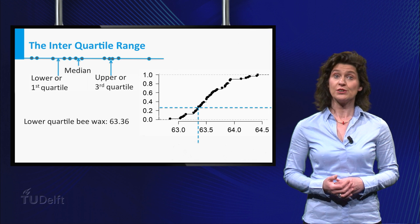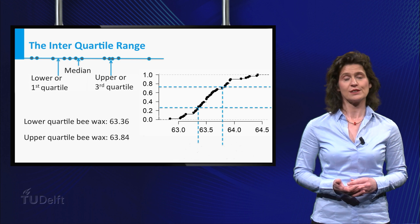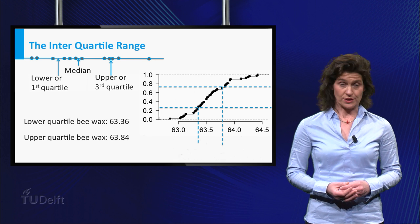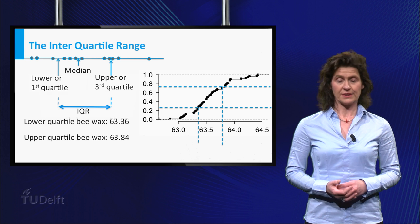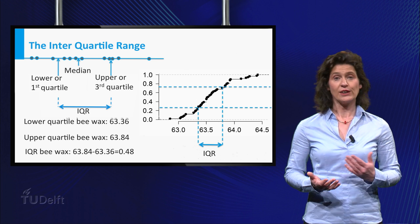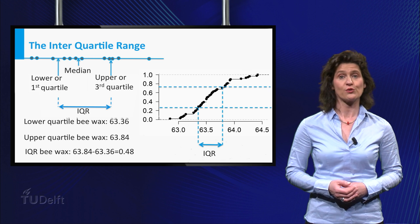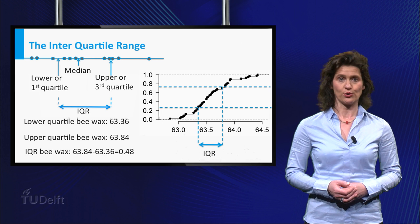Similarly, you can determine the upper quartile and for this dataset its value is 63.84. Based on these quartiles, you can define a third measure of variation of the data, the interquartile range. This is the difference between the third and the first quartile. As you see, for the melting temperatures of natural b-wax, the interquartile range is equal to 0.48.